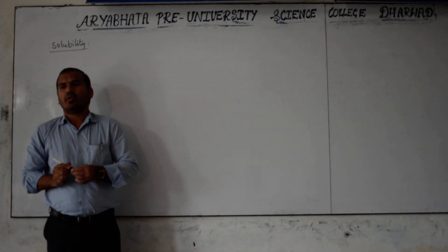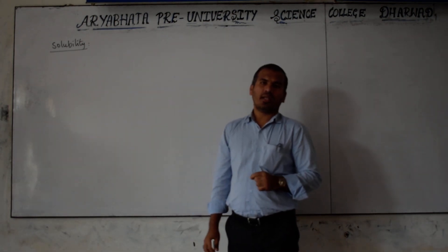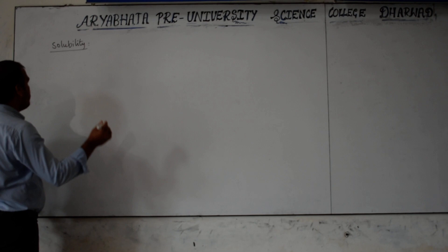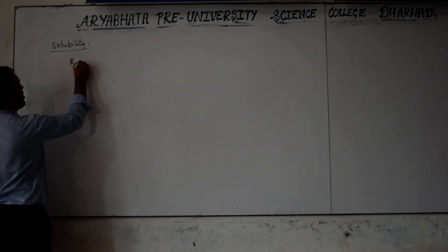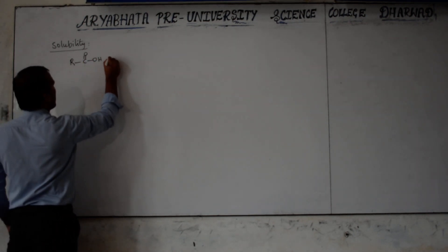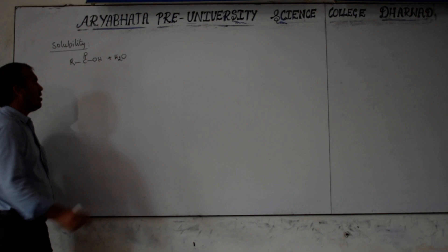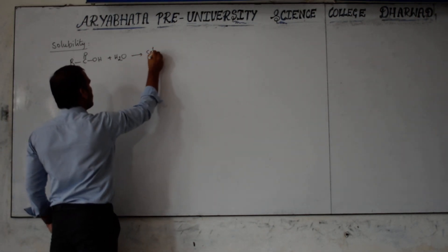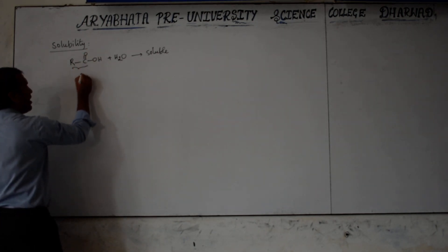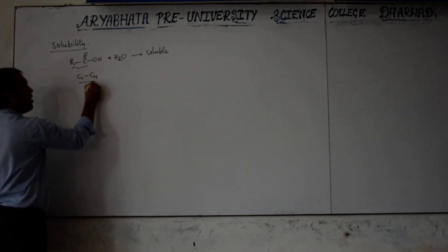The solubility of carboxylic acids in water depends upon the polar nature of the compound and its ability to hydrogen bond with water. Carboxylic acid has the structure R-C(=O)-OH. When carboxylic acid is added to water, it is soluble up to a certain number of carbons. According to our textbook, carbon numbers C1 to C4 are soluble in water.